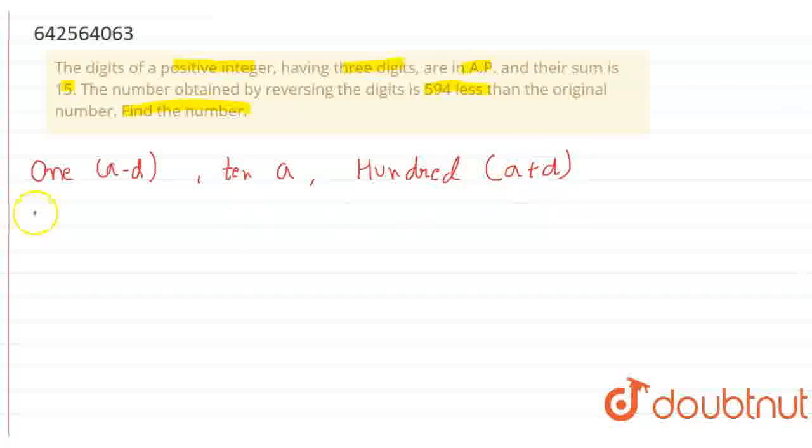Now the number is 100 times A plus D, plus 10 times A, plus A minus D. So when we solve this, we will get 111A plus 99D.